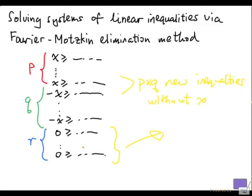We can now use this to prove a fundamental fact in linear programming. In linear programming, there is a theorem that says: if you have a linear programming problem, if it is not infeasible — meaning there is a solution that satisfies all the constraints — and if it is not unbounded — meaning for a minimization problem the objective function value cannot be arbitrarily negative — then you must be able to find an optimal solution.